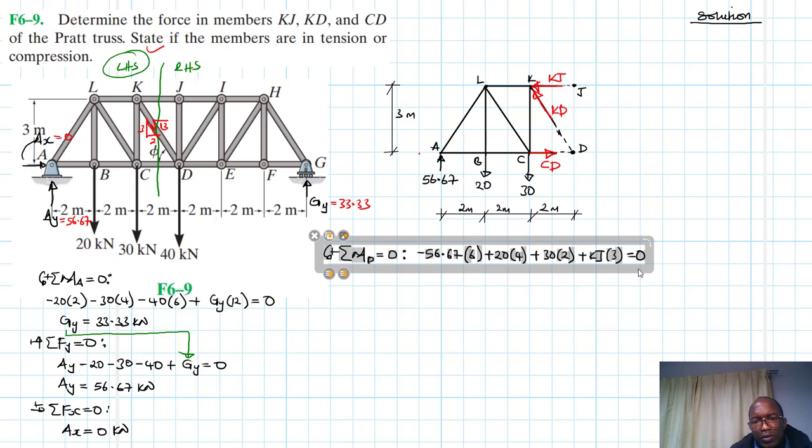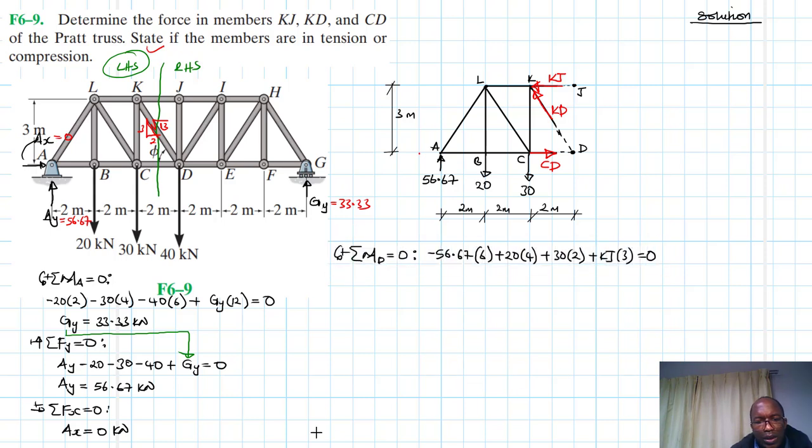Therefore, KJ is just going to be equal to minus 56.67 by 6 plus 20 by 4 plus 30 by 2, then divide it by 3. So we have KJ equal to 66.67 kilonewtons, and this is compression.